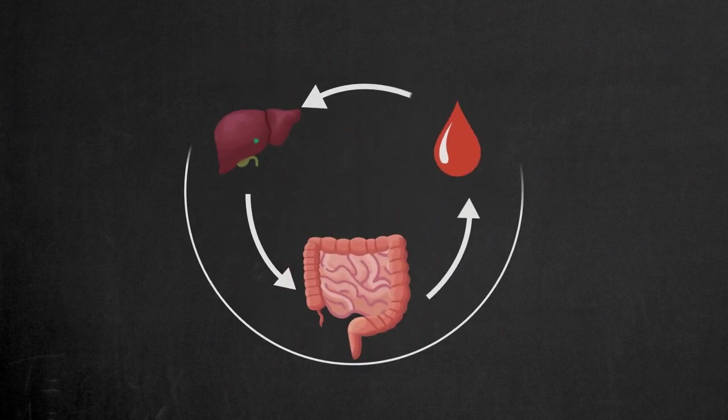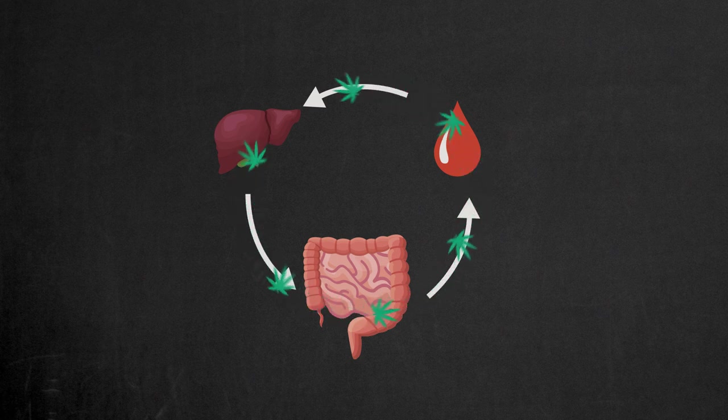Interfere with the enterohepatic circulation, so the THC metabolites in the intestines are not reabsorbed into the blood and not excreted through urine.